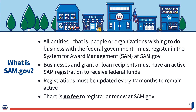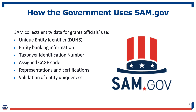The System for Award Management is an online portal where entities, including people or organizations, register in order to do business with the federal government. This includes grant recipients. To apply for the SVOG program, entities must have an active SAM registration. If you have an existing registration, you may need to update it. There is no fee to register in SAM. The SAM system captures entity data including the entity's unique identifier, banking information, taxpayer ID number, and CAGE code. SAM also provides a repository for representations and certifications necessary for the grant-making process, and validates entity uniqueness to support database integrity.